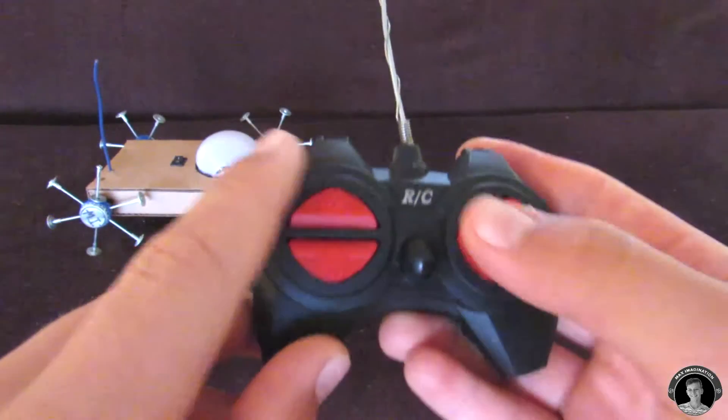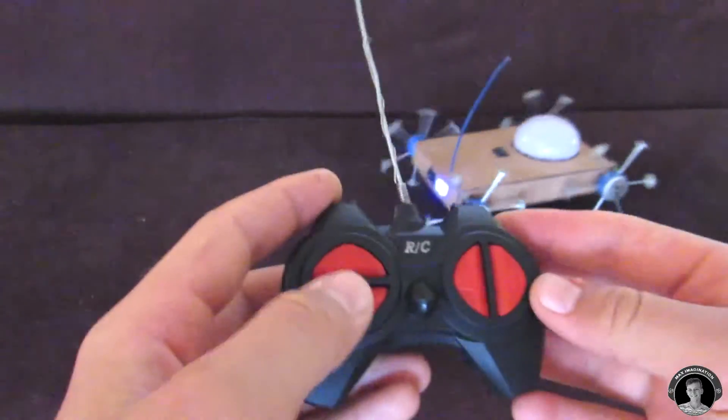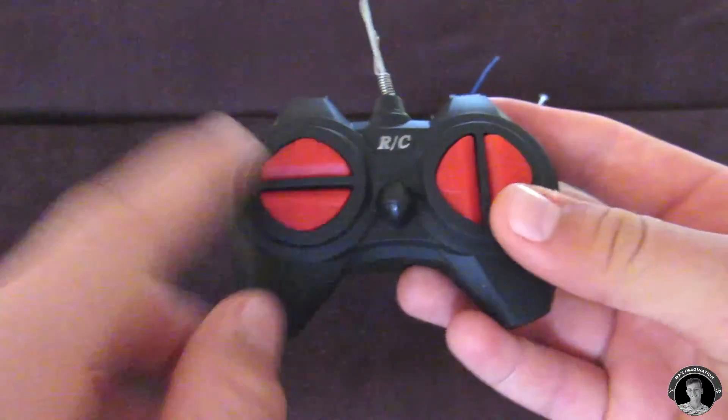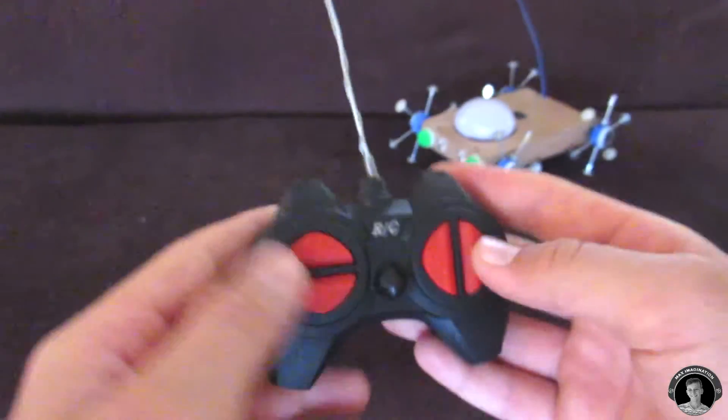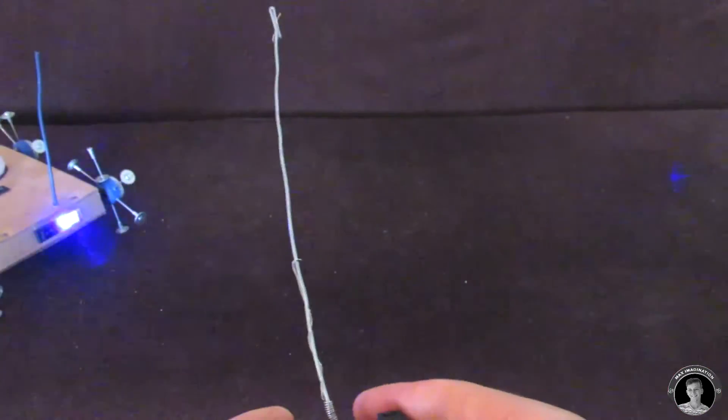So how to drive your rover, these two buttons here make it go forward, the other two make it go backwards. Mine just work a bit bad so I'm not going to show you. And these two make it turn that way, those two make it turn the other way. Let's go test it out some more.